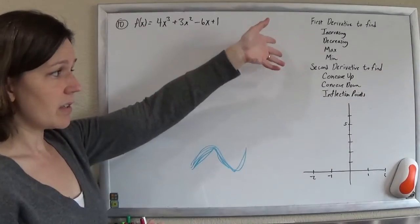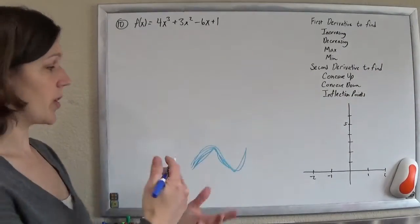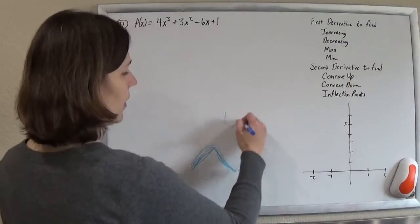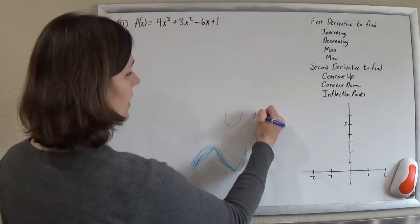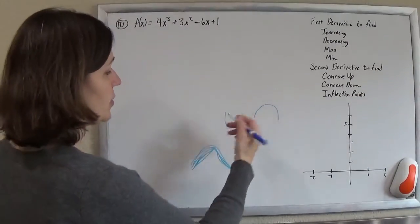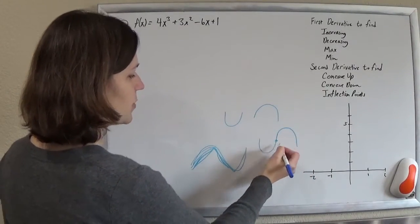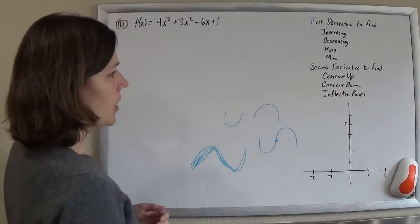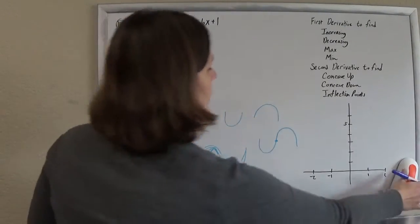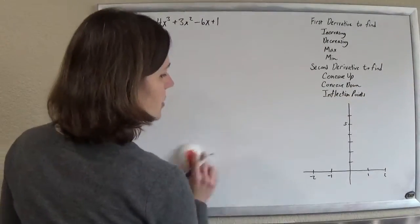Then you're going to find your second derivative to tell you about your concavity. So concave up looks like a cup, concave down looks like a frown, and where it changes from concave up to concave down, that's what they call an inflection point. So let's just do this.